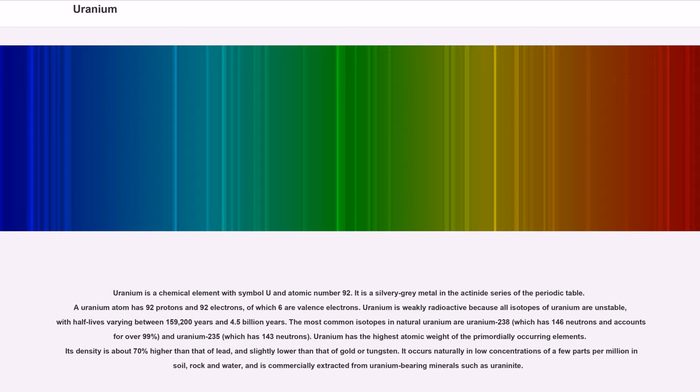Uranium is weakly radioactive because all isotopes of uranium are unstable, with half-lives varying between 159,200 years and 4.5 billion years. The most common isotopes in natural uranium are uranium-238, which has 146 neutrons and accounts for over 99%, and uranium-235, which has 143 neutrons.